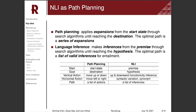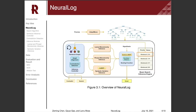Monotonicity reasoning is a vertical action, since it also moves up and down. Syntactic variation and synonym replacement are horizontal actions, because they change the form of a sentence while maintaining the meaning. Then, an optimal path in NLI is a valid reasoning chain for entailment that contains a list of inferences.